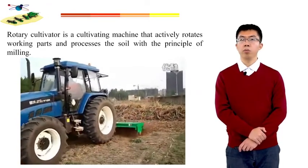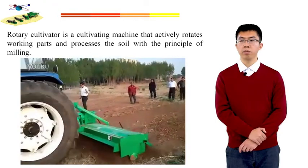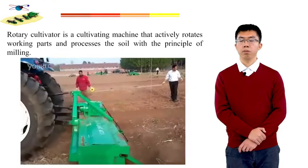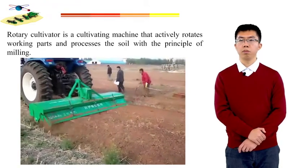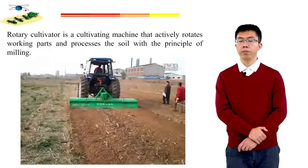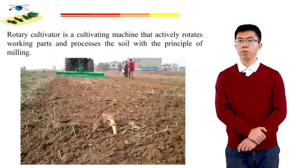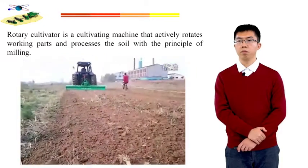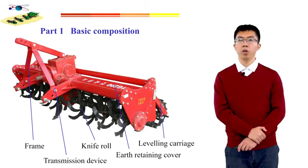Now let's watch a video about the rotary cultivator. The rotary cultivator is a cultivation machine that actively rotates and processes the soil with the principle of milling. In this picture, we can see the result of the rotary tiller. The basic composition of the rotary tiller contains frame, transmission device, knife roller, earth retaining cover, leveling carriage, and so on.